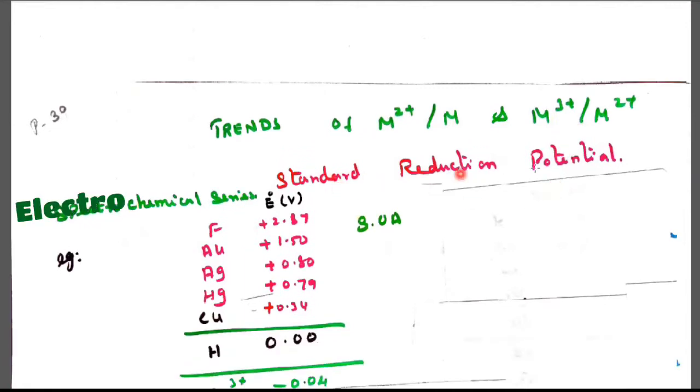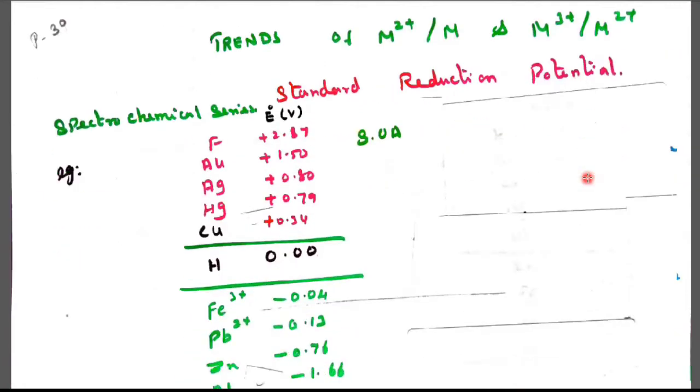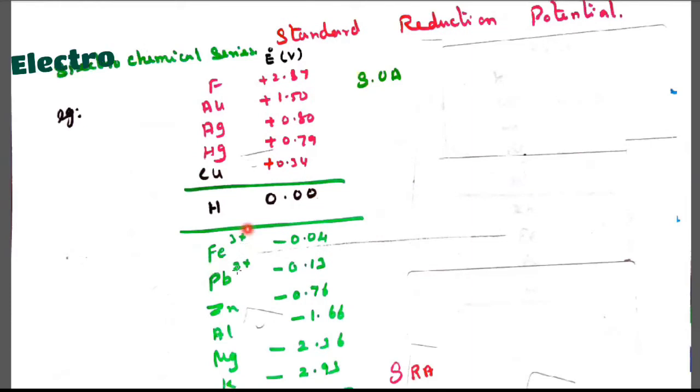Electrochemical series standard reduction potential: fluorine, gold, silver, mercury, copper have positive values.